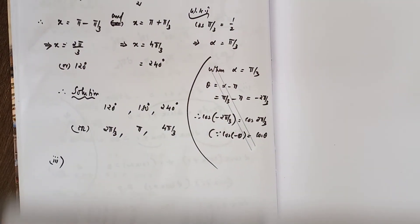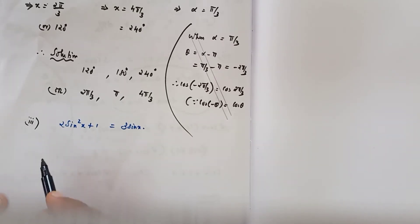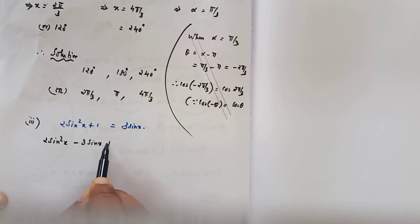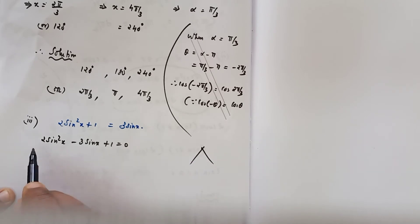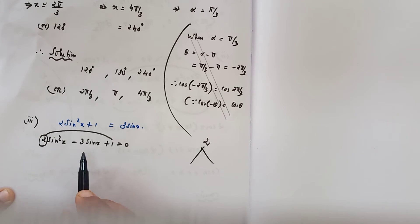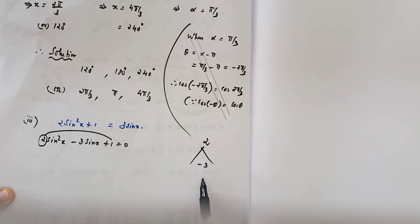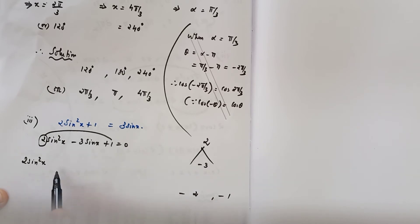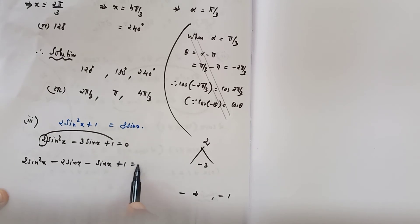Subdivision 3: 2sin²x minus 3sinx plus 1 equals 0. Splitting the middle term: coefficient of sin²x is 2, times constant 1 gives 2, and coefficient of sin x is minus 3. Product 2, sum minus 3 — the two numbers are minus 2 and minus 1. So: 2sin²x minus 2sinx minus 1·sinx plus 1 equals 0.